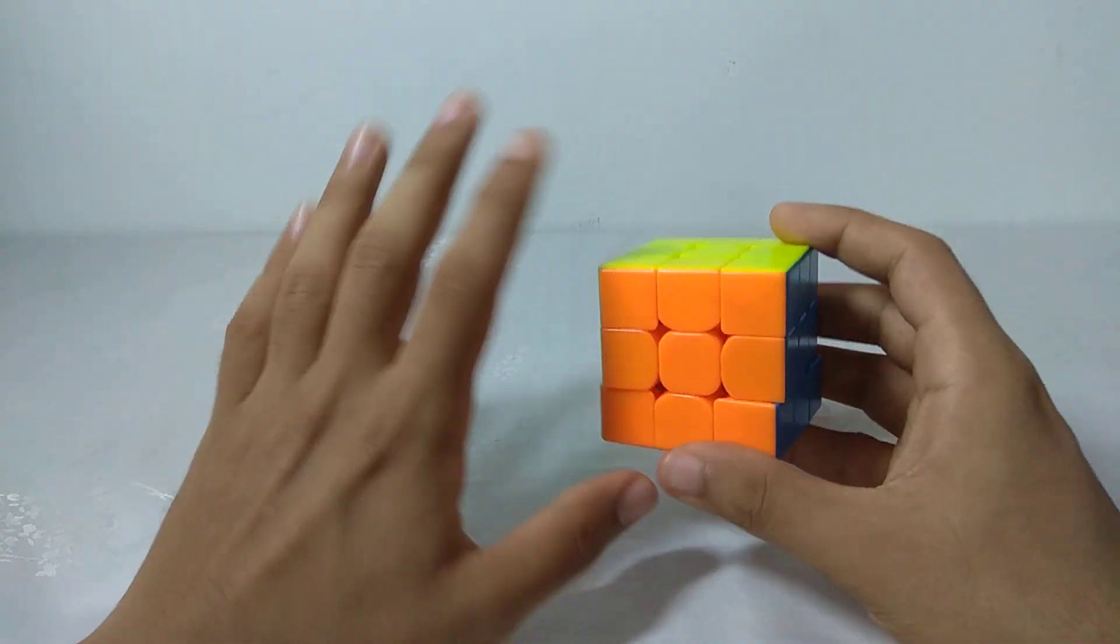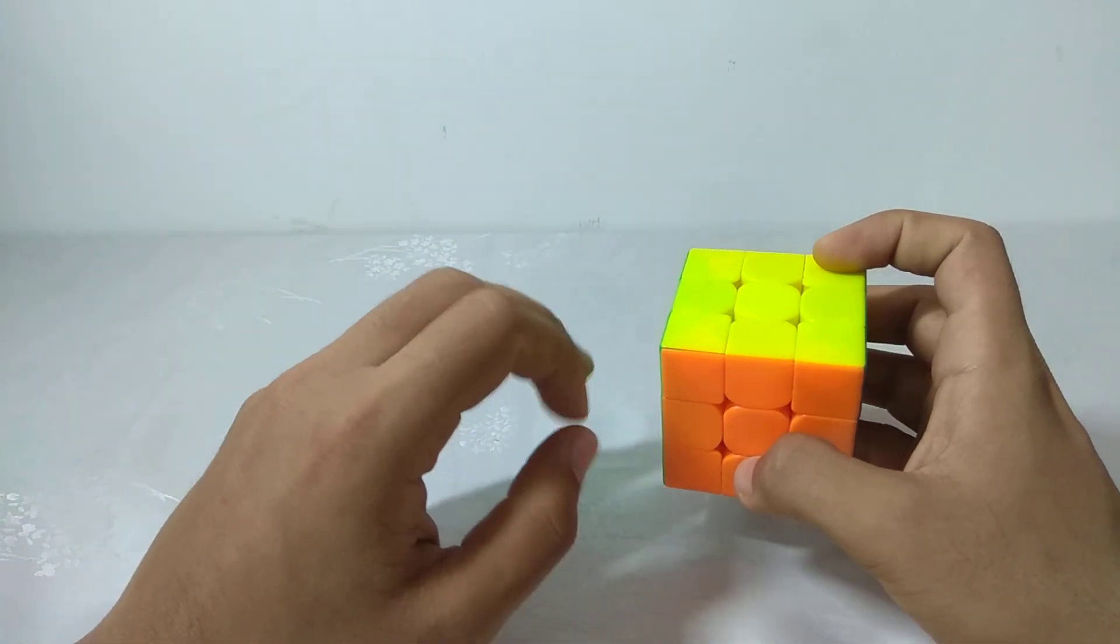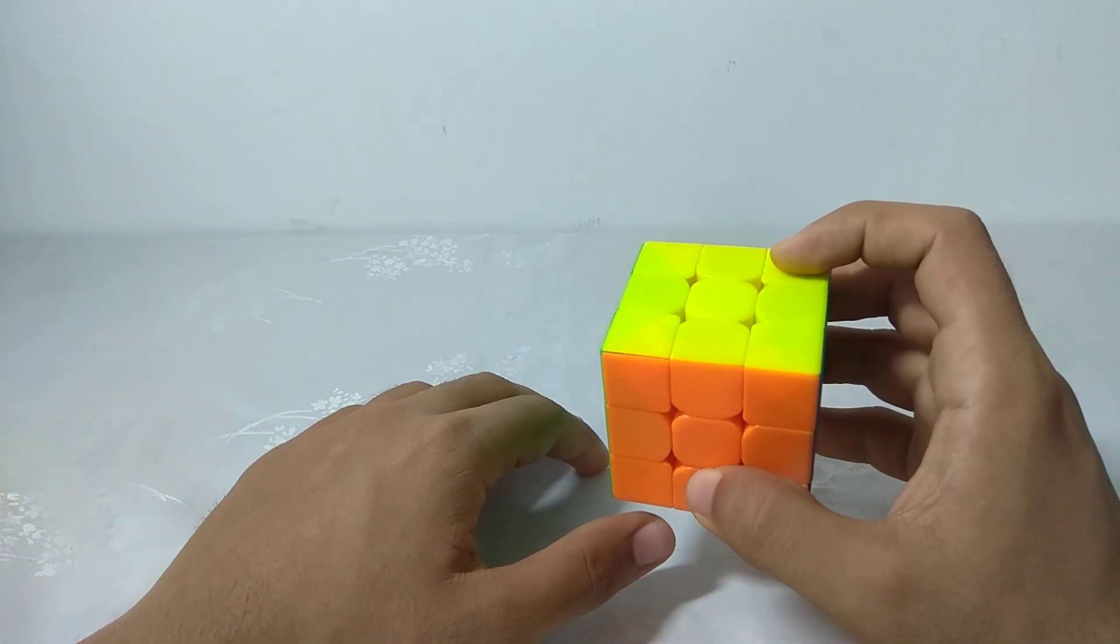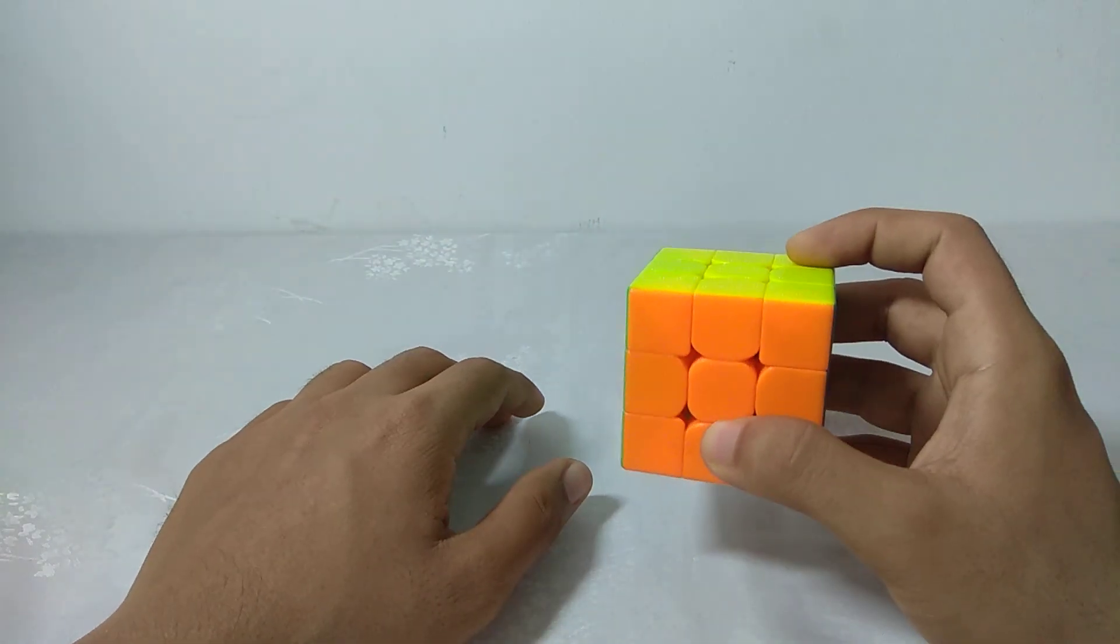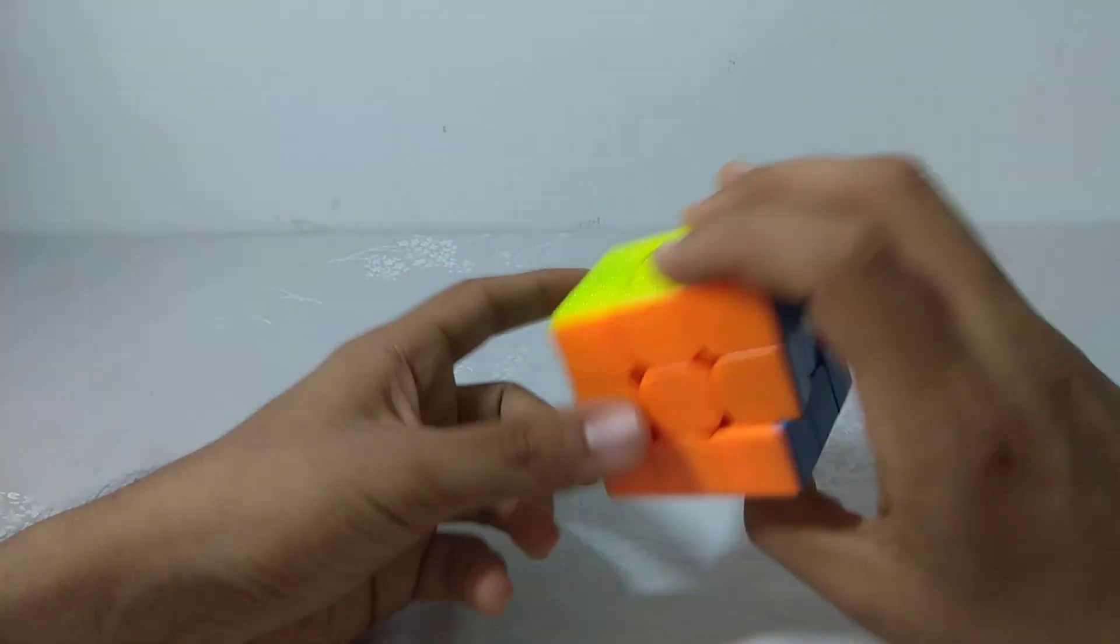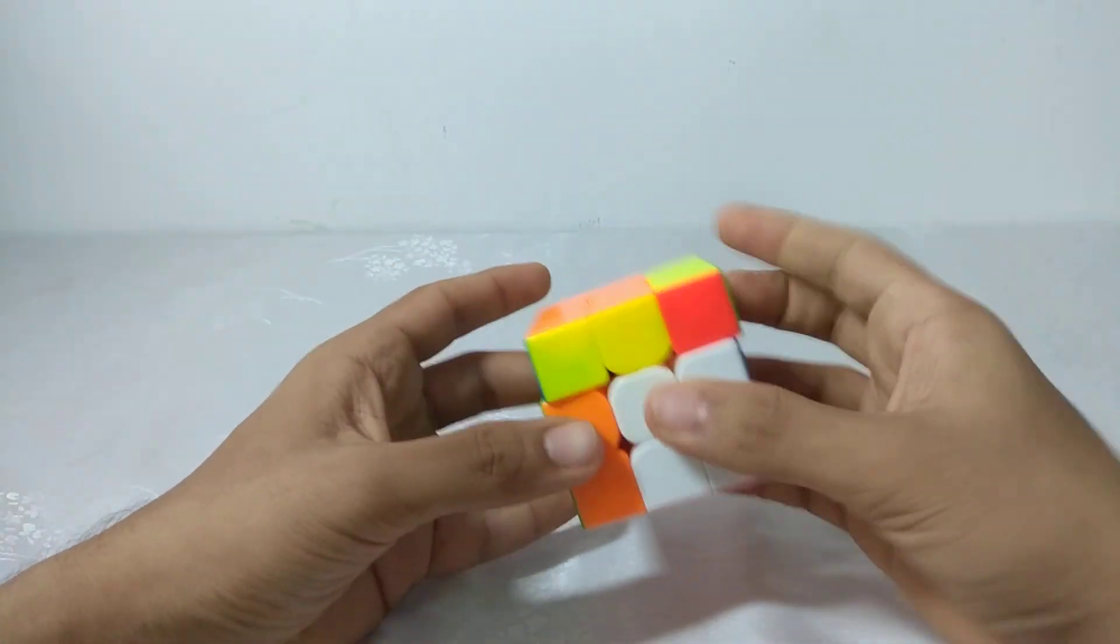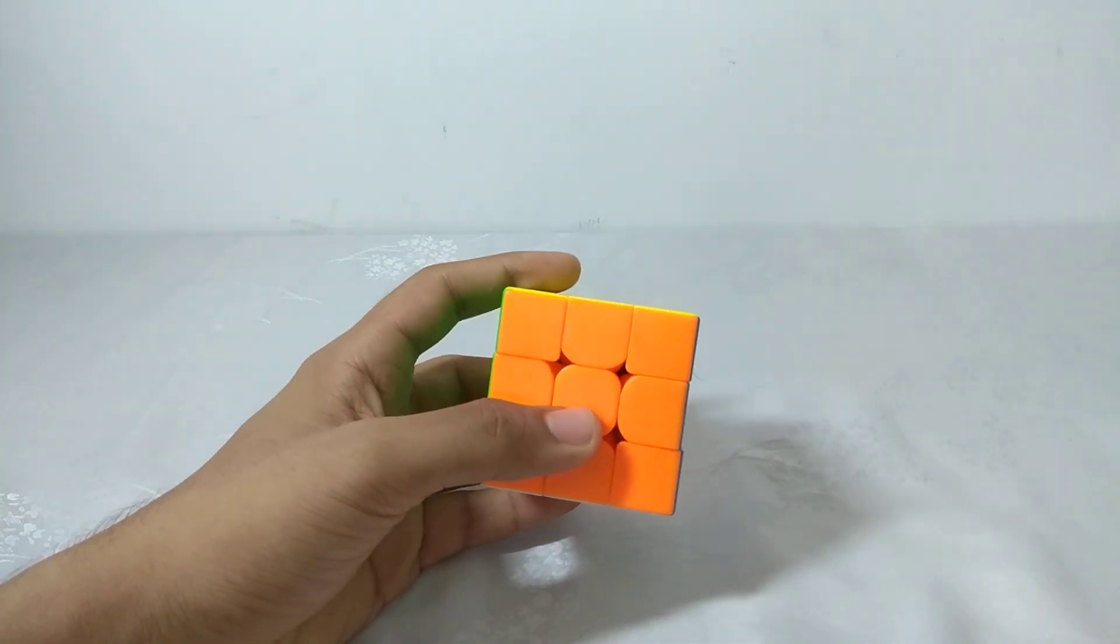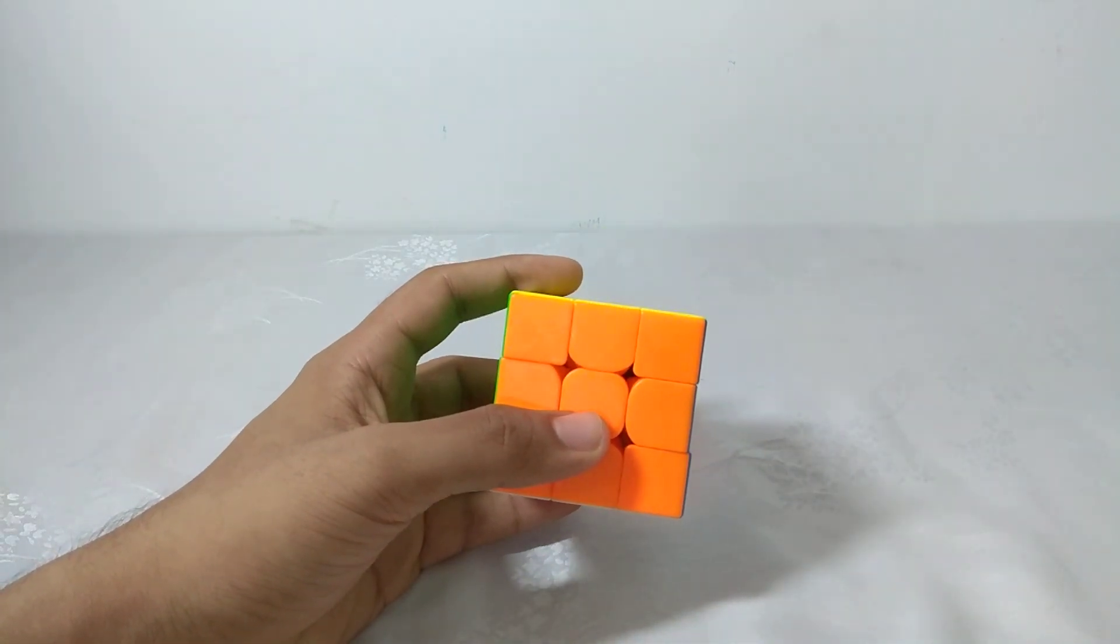What you can focus on is watching top people solve and how they transition between algorithms, transition between memo and execution, and the transition between the last letter pair and the parity. There are many transitions and aspects of fluidity that you need to see.